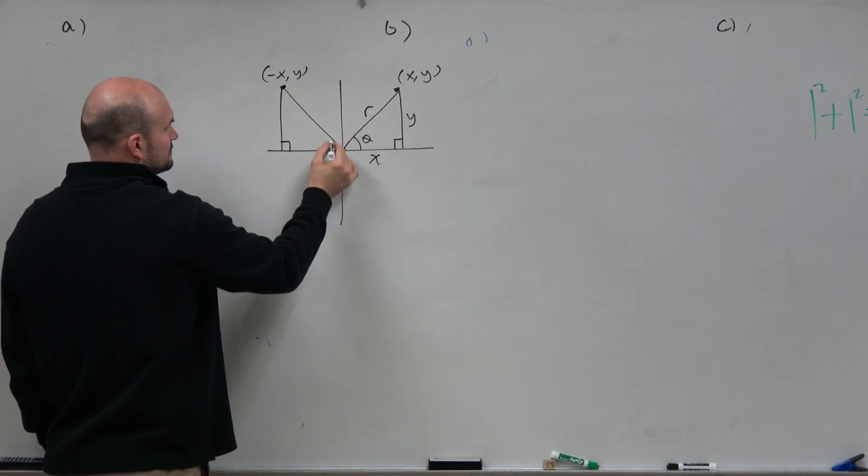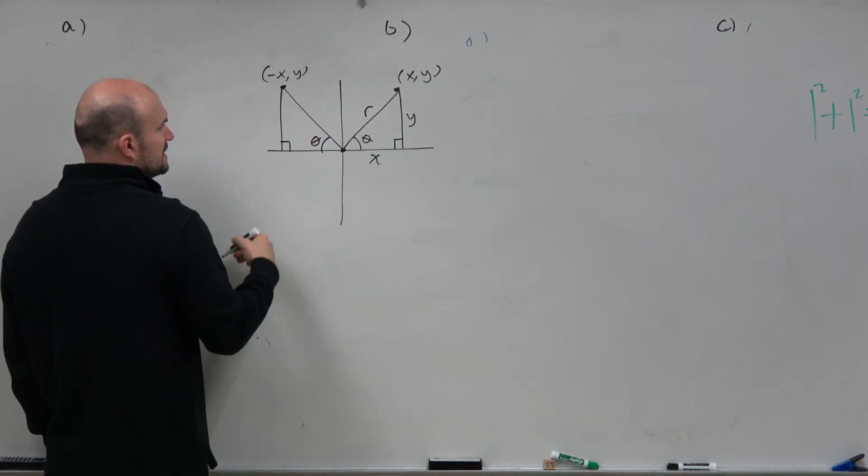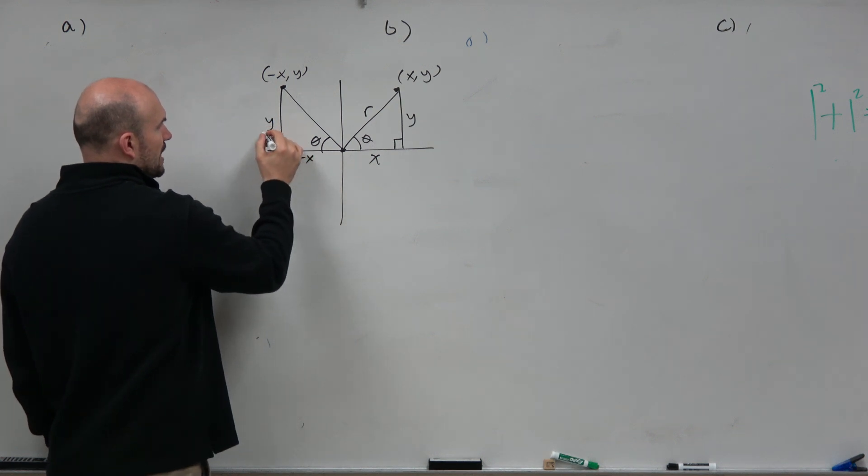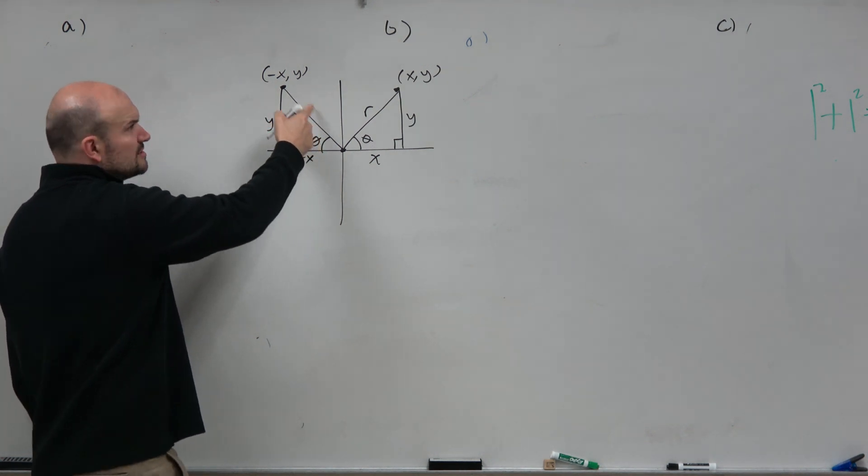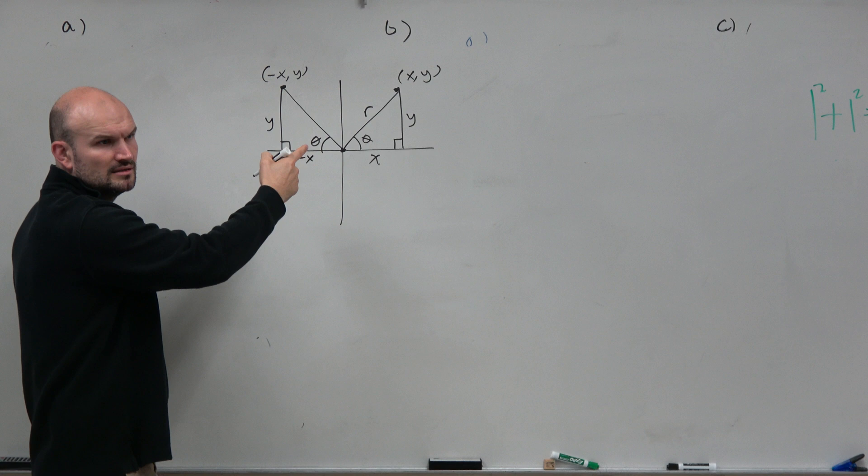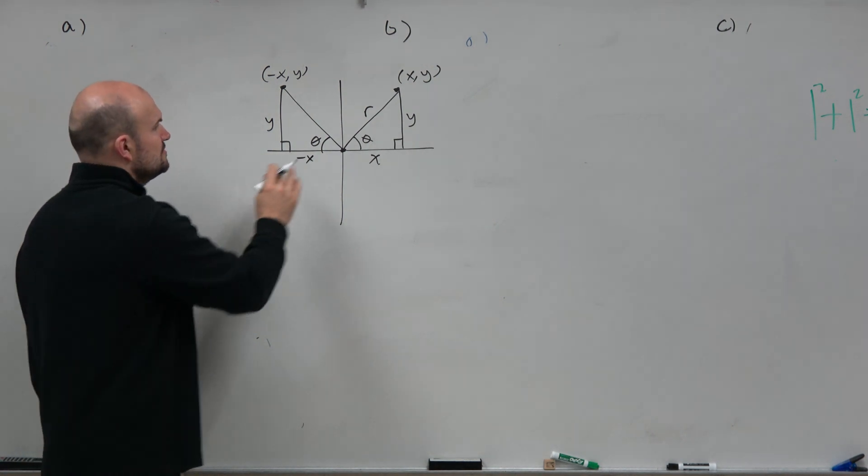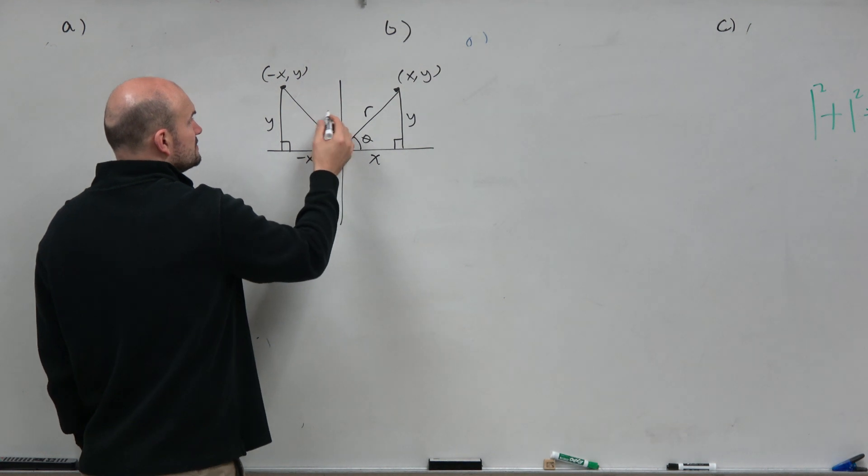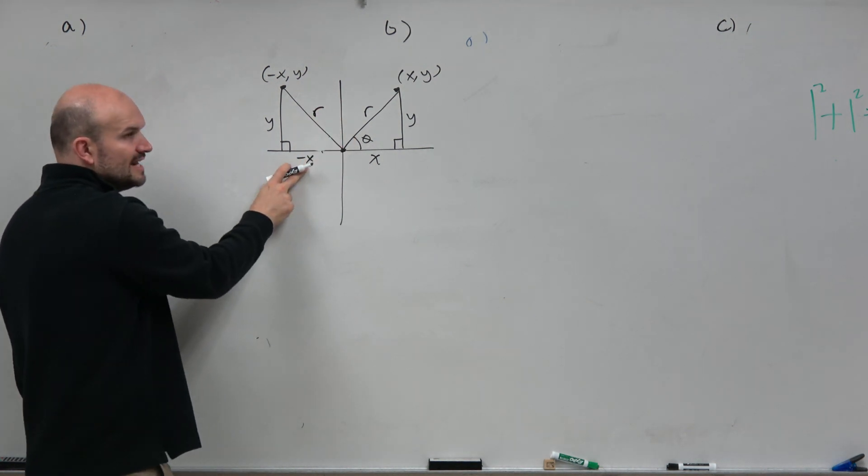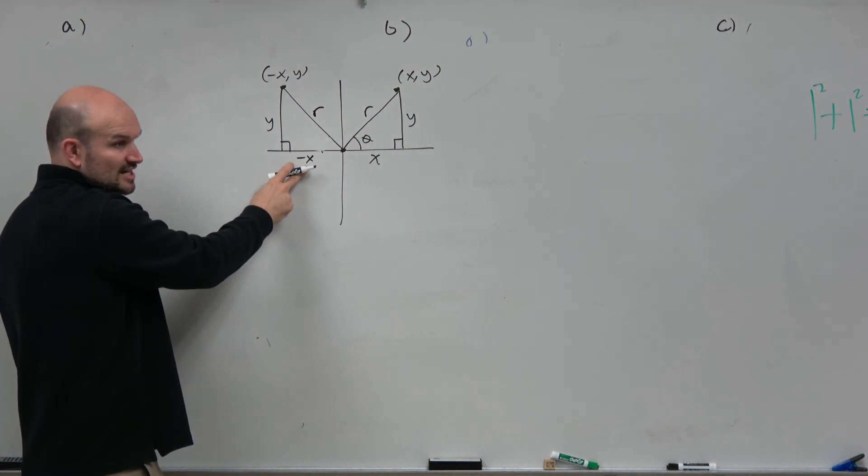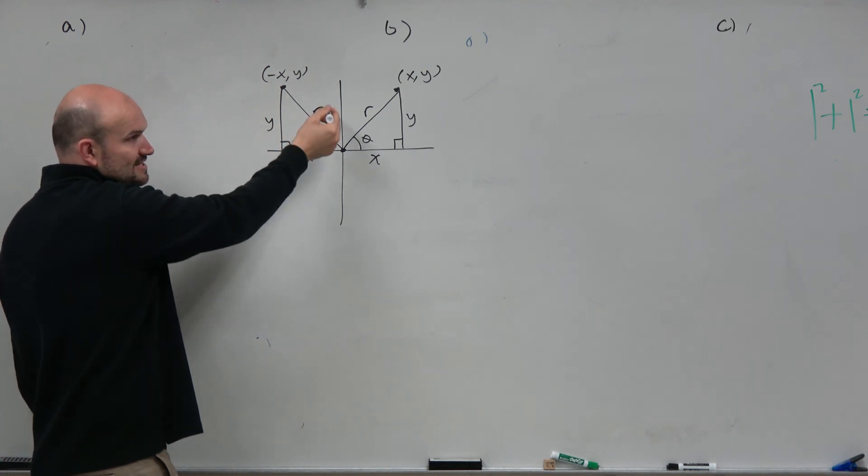Do the same thing. Now, this is negative x. This is y. Should this still be r, or now that it's negative, should it be a negative r? I'm sorry. It's still r, right? Because negative x squared is x squared. y squared is y squared. Like, that's still always going to be positive.